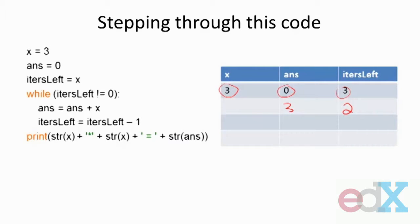I go back up, and again, I check. Is that not equal to zero? It is not equal to zero. Therefore, I take answer, and I take x. I add them together, and I rebind those to be the new value of answer. I change itersLeft by one. That's my new value there. And again, I go back to the loop. That is not equal to zero. But the test is still true.